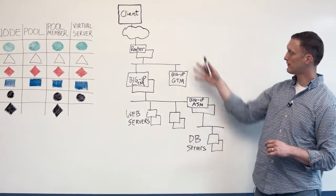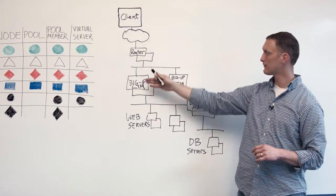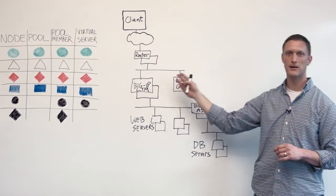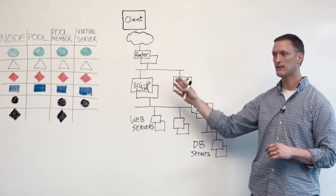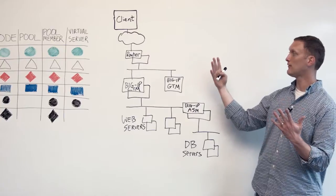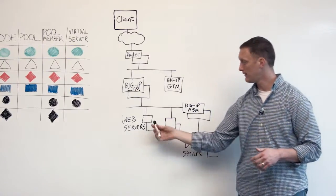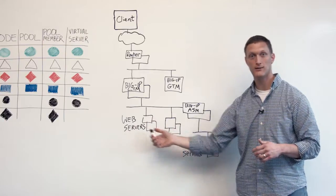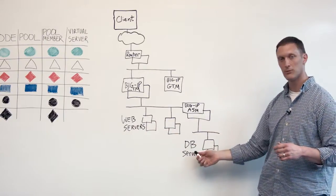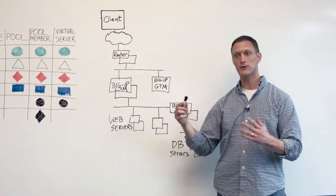So I have this picture up here of a client that maybe comes through a router to a Big IP LTM or maybe a GTM is balancing some DNS traffic for you. You may have an ASM that's protecting your web application, and from a basic perspective you have a client that wants to access your web app and your web servers are down here in your data center with the database servers as well.